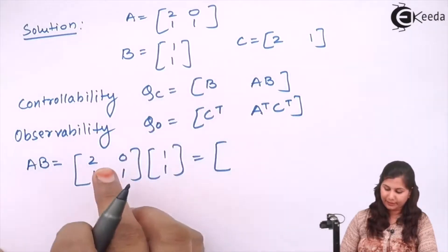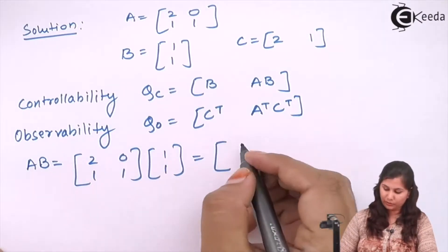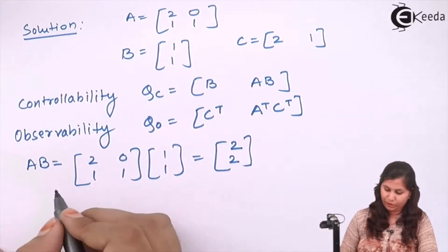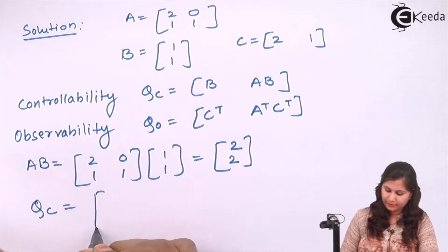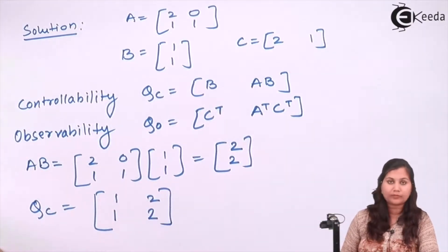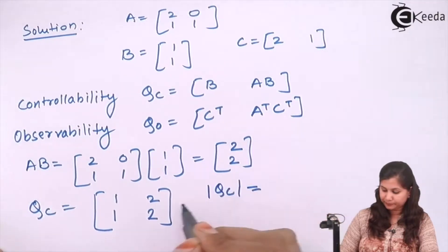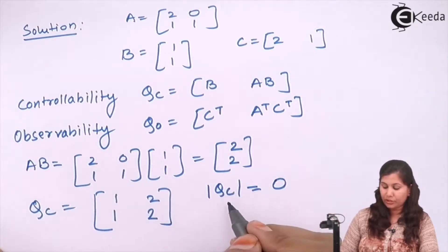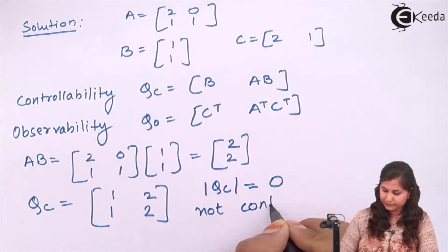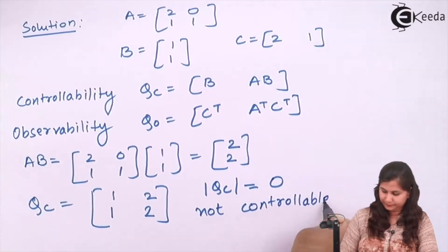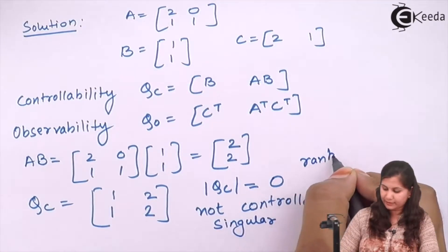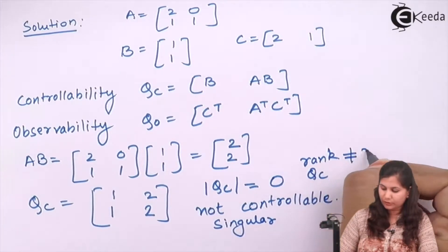Multiplying A and B matrix: 2 into 1 and 0 into 1 gives 2, and 1 and 1 gives 2. So our QC matrix is: B matrix is [1; 1] and AB matrix is [2; 2]. Let's check its determinant — it is 2 minus 2, which equals 0. So the determinant is 0, meaning the system is not controllable. This is a singular matrix and the rank of QC matrix is not equal to 2.